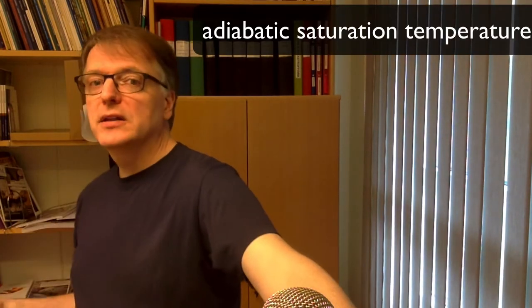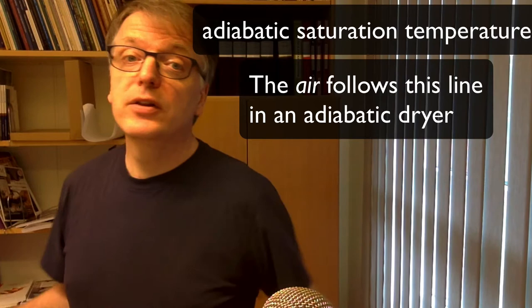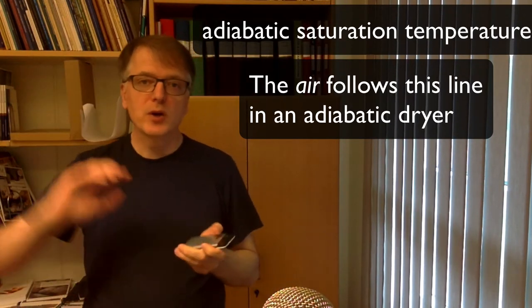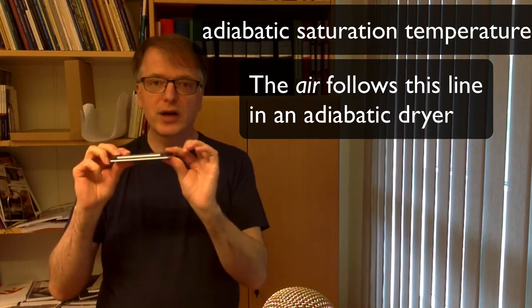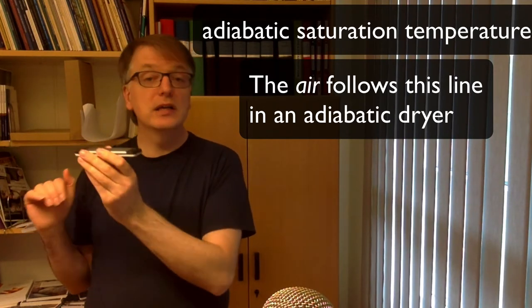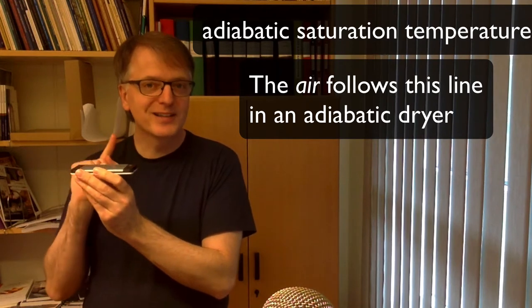Or if you take a thermometer and then put some wet cloth on it and then you circle it around, then you get the wet temperature. The adiabatic saturation temperature, that one you get if you, for example, dry something in a dryer. So you have a system where you put in hot air and then you have some goods that you want to dry with a wet surface and then you heat that up to the adiabatic saturation temperature.